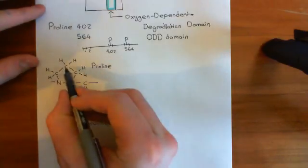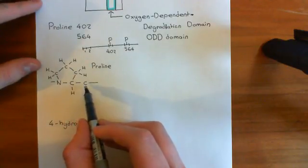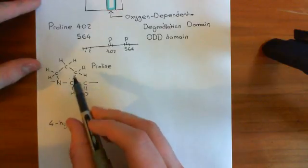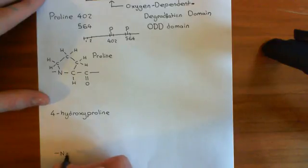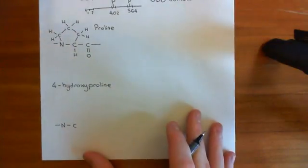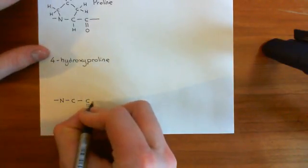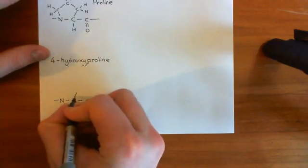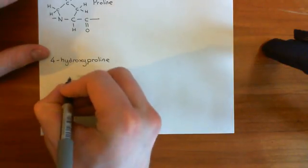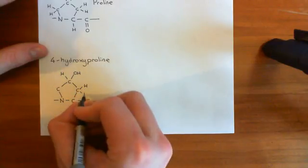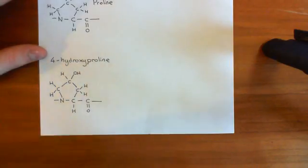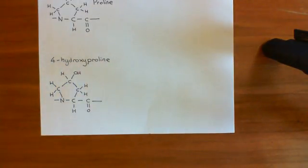4-hydroxyproline has an alcohol group coming off the fourth carbon. The carbon with the carboxylic acid group is counted as the first carbon, the alpha carbon is second, then third, then fourth — so we're adding an alcohol group onto the middle member of the ring. This is what happens to the proline at position 402 and the proline at position 564 in the ODD domain of HIF1 alpha, normally occurring in normoxic cells, and this hydroxylation leads to the degradation of HIF1 alpha.